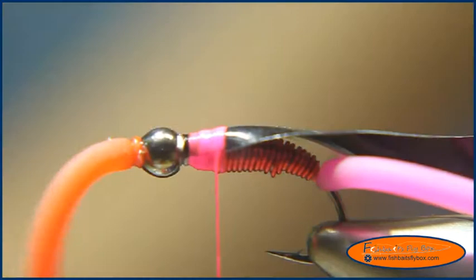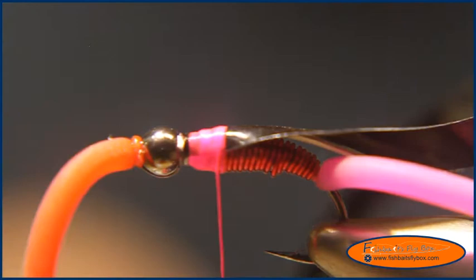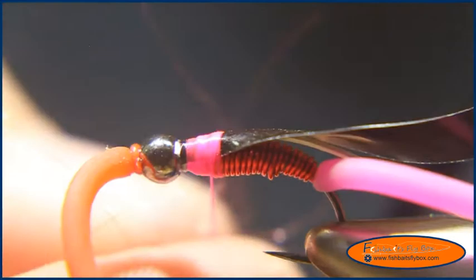And now I'm going to take some UV dubbing. And for this particular fly, I use either UV red or UV pink. For this one I'm tying. And I'm going to use UV red and build a thorax.